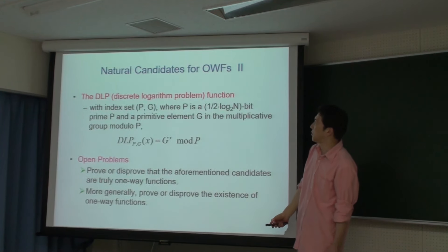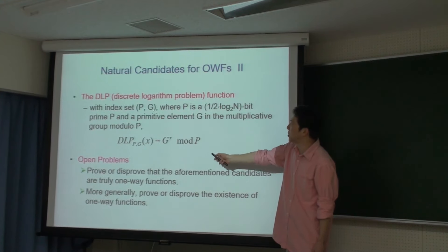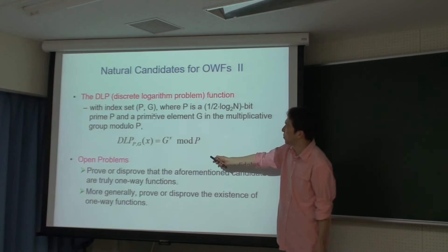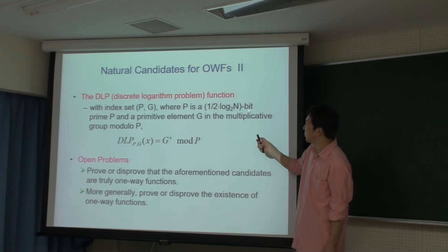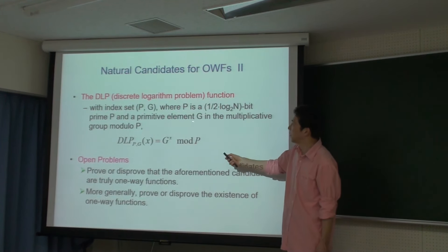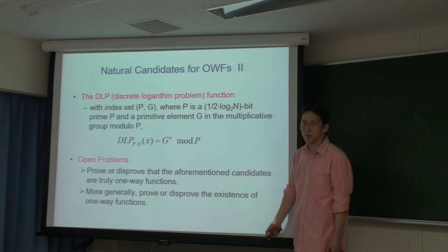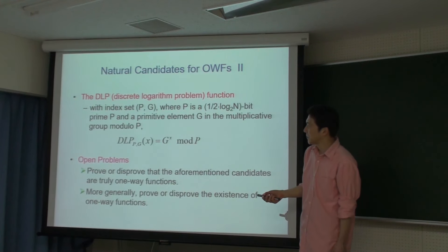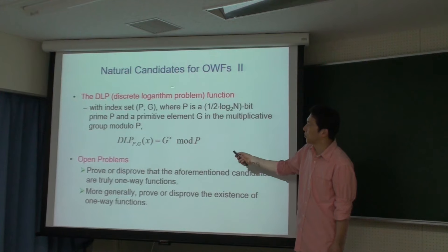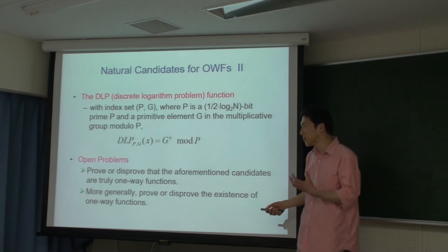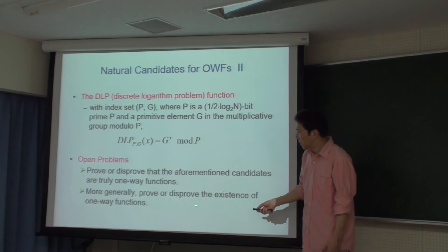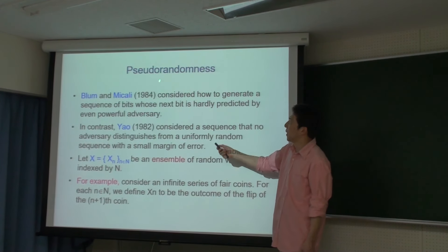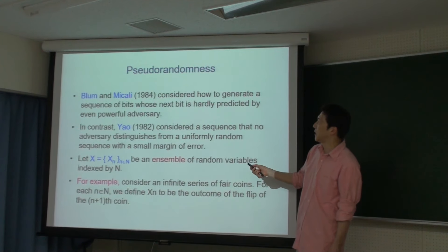Discrete Logarithm Problemのファンクション（DLPファンクション）というものもあります。Pは素数で、Gは乗余群Z_P*の中のプリミティブなエレメントとして、G^X mod Pという形で定義されます。さっきのやつだとX^Eという形でしたが、今度はG^Xという形で与えられる関数になっています。これらの候補が本当にワンウェイファンクションなのか、またワンウェイファンクション自体が存在するのかしないのかが大きな問題です。